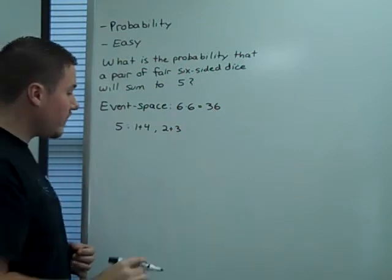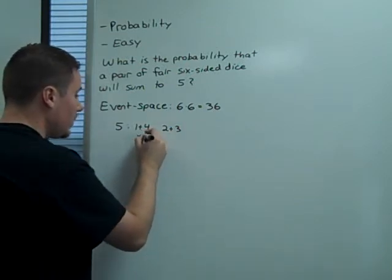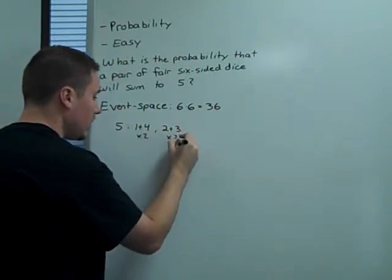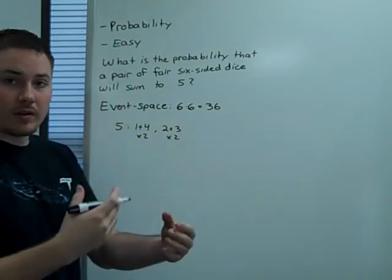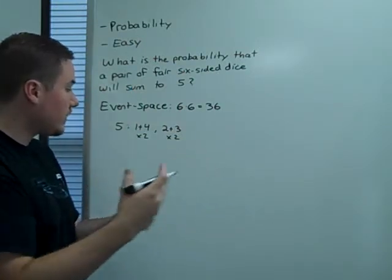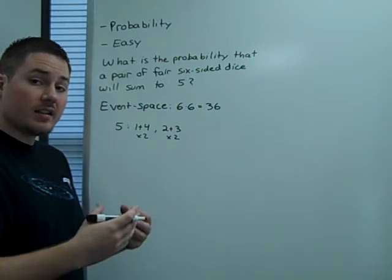But each one of these events can occur twice. That is, a one and a four, or a four and a one, a two and a three, and a three and a two. And those are different events.